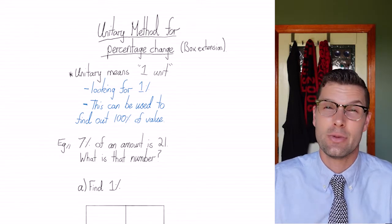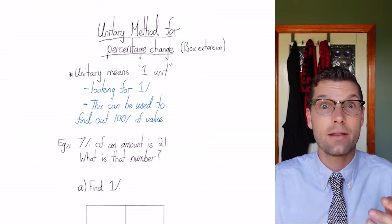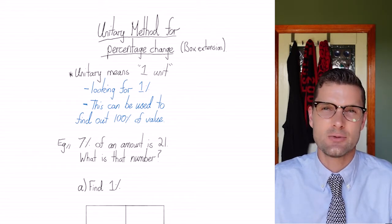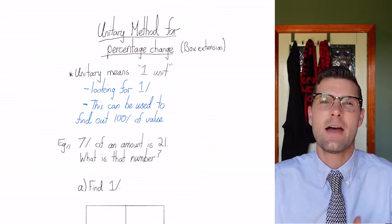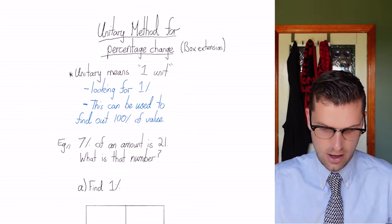So if you haven't checked that one out, it could be really helpful. The unitary method means we're finding one thing, or one percent. So with these percentage ones, if you've been given a question, finding one percent then allows us to find any percentage amount that we want.